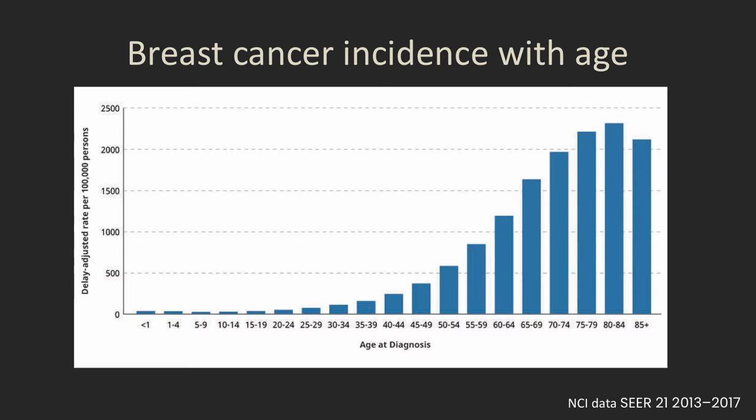Before we launch into screening mammography, I just want to show you a graph about breast cancer incidence with age and just how much it starts zooming up. There's no real threshold, so whether you're following a protocol that says screenings start at 40 or screenings start at 50, there's no magic change — it just gradually increases through age.